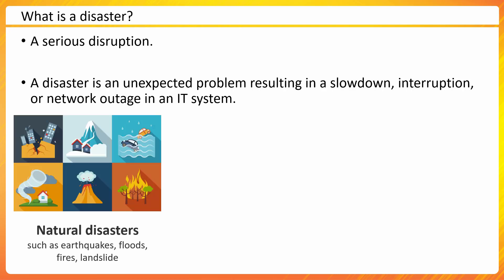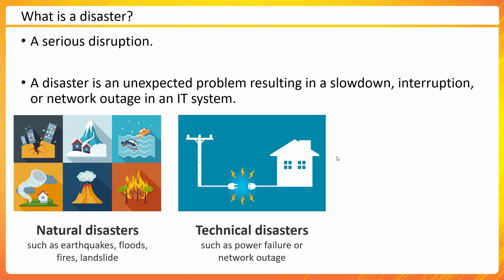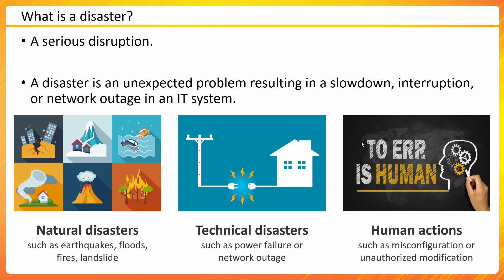Disaster could be natural disasters such as earthquake, flood, fire, landslide, or inferno. It could be technical disasters, like power supply failure or a network outage in a larger area. Or commonly, it can also be the result of human error — human actions such as misconfiguration or unauthorized modification may also result in a disaster.